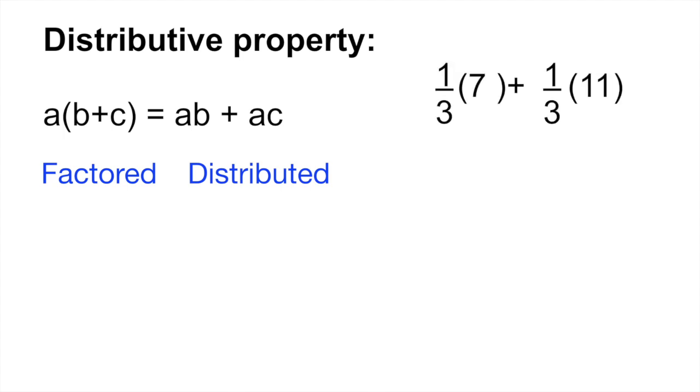If we go back to our equation 1 third multiplied by 7 plus 1 third multiplied by 11, this is in a distributed form. Notice that you have 1 third here and 1 third here. So all you have to do is rewrite this equation in a factored form. So we would say 1 third multiplied by 7 plus 11. That would give us 1 third multiplied by 18.